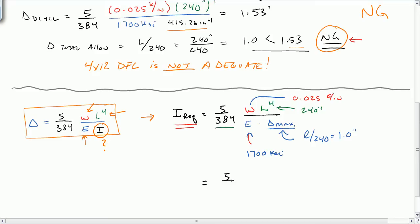Just plug in the numbers. We get 5 over 384 times 0.025 kips per inch times 240 inches to the 4th divided by 1700 ksi times 1.0 inches. When we do this, we get 635.3 inches to the 4th. So this is our I required.